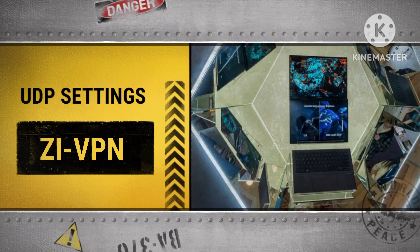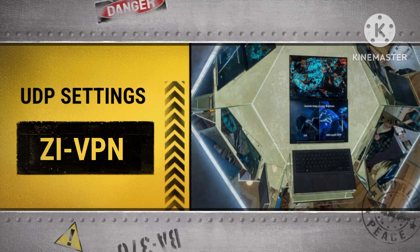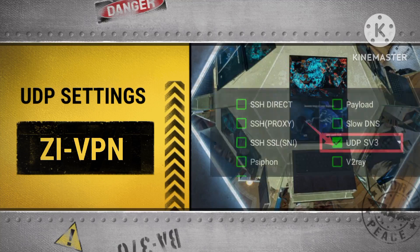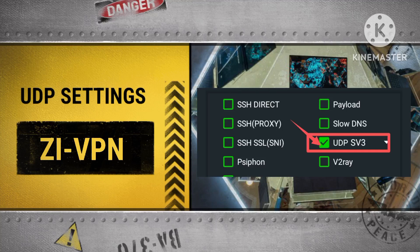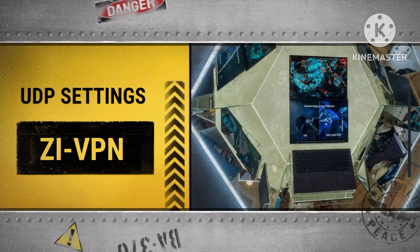Step 6: Enabling UDP Protocol. Tick the box next to the UDP option to enable the UDP protocol for your ZI-VPN connection.